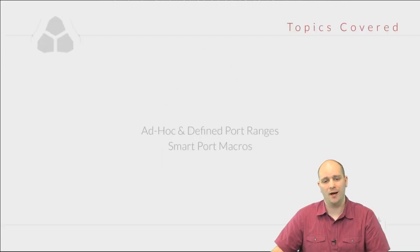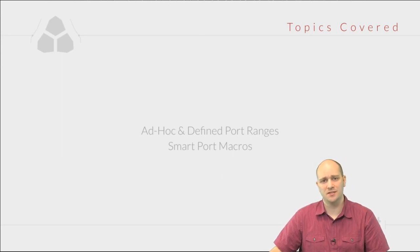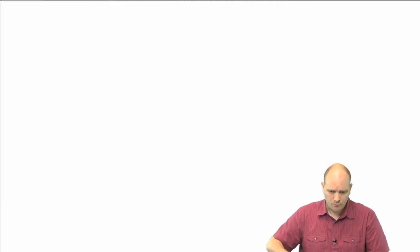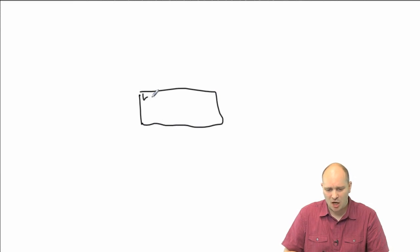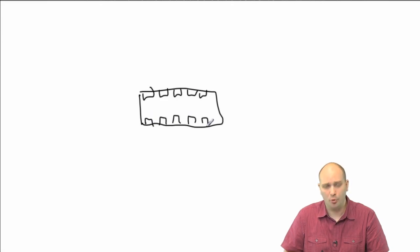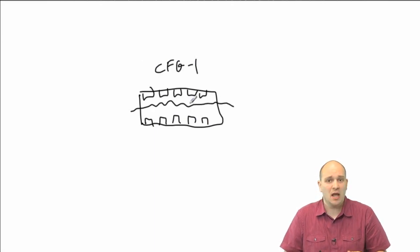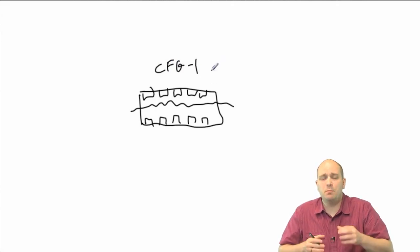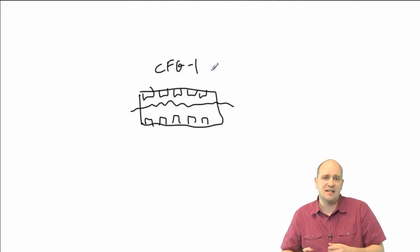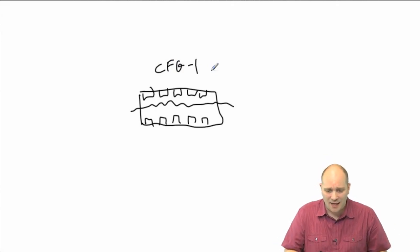In this video we are going to talk about the ad hoc and defined port ranges and the smart port macros. Imagine that I had a switch with a large number of ports — let's say 10 ports. I wanted these 10 ports on top to have configuration one, meaning a common set of configuration parameters, such as being access ports in VLAN 10, and the ports below would have configuration two.